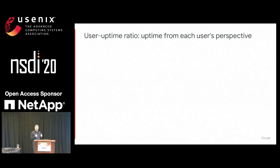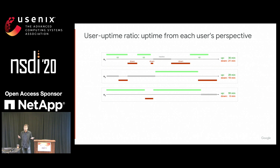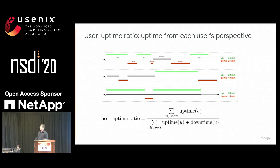To address the limitations of those two measures, we have a new measure called the user uptime ratio. The key insight is that we want to measure uptime and availability from the perspective of the user. Suppose you have three users — the green line represents the system being up, the red line represents the system being down. Different users have very different perceptions of when the system was up or down because we don't have global failures, we have local failures. We collect that information and aggregate it to get a ratio between 0 and 100%.